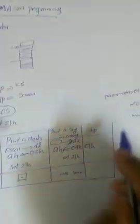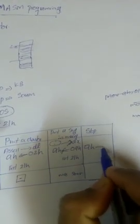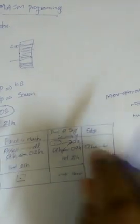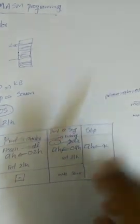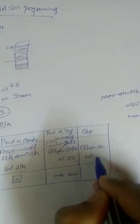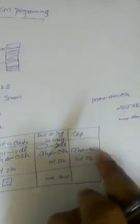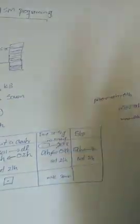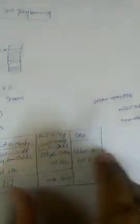So this is the third operation. Now let's go to the fourth one. The fourth one uses the same approach — I move 4CH into the AH register and call the interrupt. If the parameter is 4CH, BIOS identifies that it needs to stop, and the program will exit.